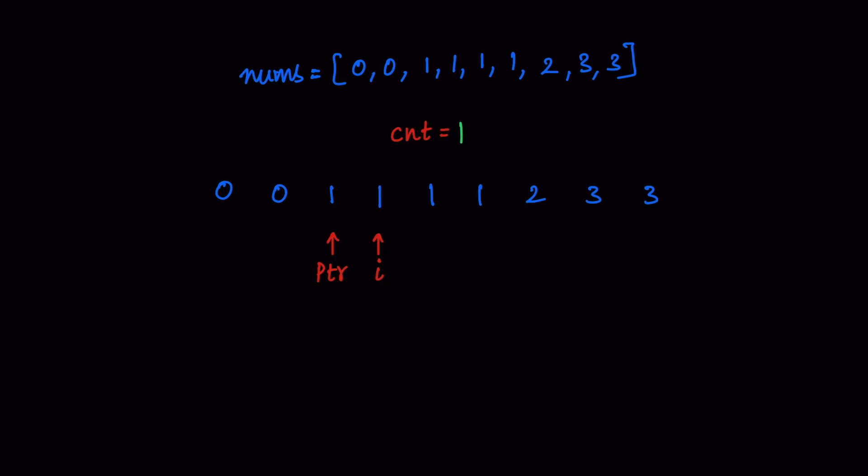So in this case, we again increment our PTR value and update the count. PTR and count are updated. Now nums[i] and nums[PTR] are at the same location, so even if we perform a swap, there is no change. We then increment our i pointer. Now nums[PTR] equals nums[i] but the value of count equals 2. We can only have two occurrences of the unique element and this would be a third occurrence, so we are not going to update anything and move on to the next element, incrementing the i pointer. Even again nums[PTR] equals nums[i] and count equals 2, so there is no change and the i pointer is incremented again.